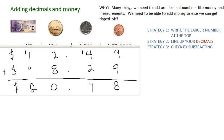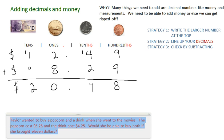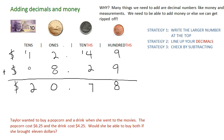So let's try a word problem now, because we always need to know how to solve word problems with money especially. I'm going to draw, because I like to visualize — it helps me solve these problems a little bit better. Taylor wanted to buy a popcorn and a drink when she went to the movies. The popcorn cost — I'm going to draw this popcorn, oh look at that popcorn — six dollars and twenty-five cents.